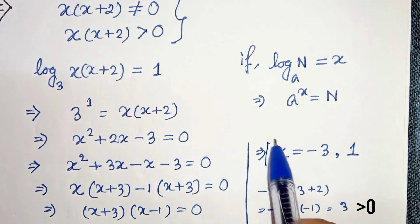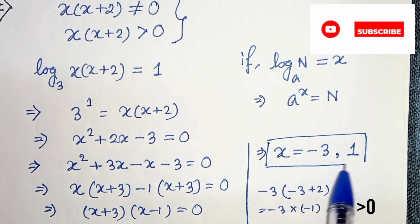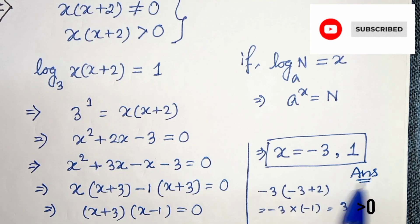Therefore both the solutions are valid. Therefore our solutions are x equals minus 3 and 1.